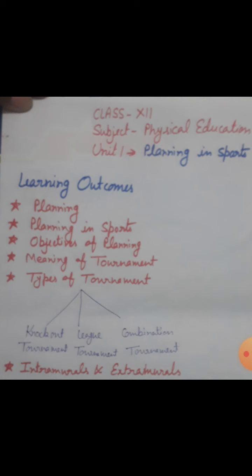Now, the types of tournament. There are three types of tournaments, as shown in the flowchart. First is the knockout tournament. Second is the league or round robin tournament. And third is the combination tournament. The knockout tournament is also known as the elimination tournament. In this type of tournament, losers are eliminated in successive rounds and winners continue to play until the winner is decided.